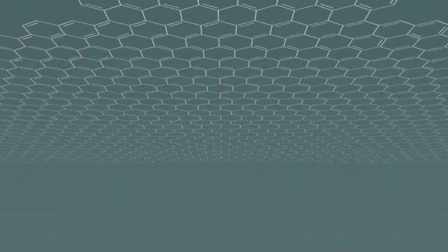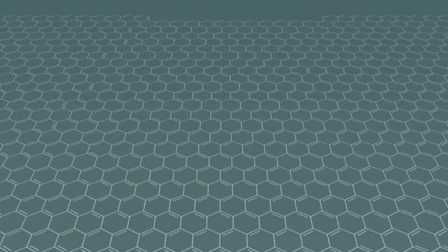The team took advantage of the remarkable electronic properties of graphene. Graphene is a sheet of carbon a single atom thick. Its structure is like an extended network of benzene rings. The freely mobile electrons in the conjugated pi bonds create a highly conductive material.